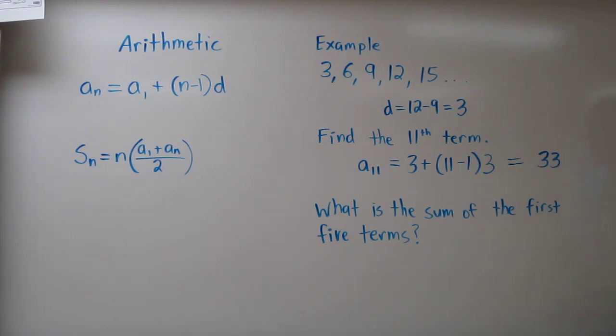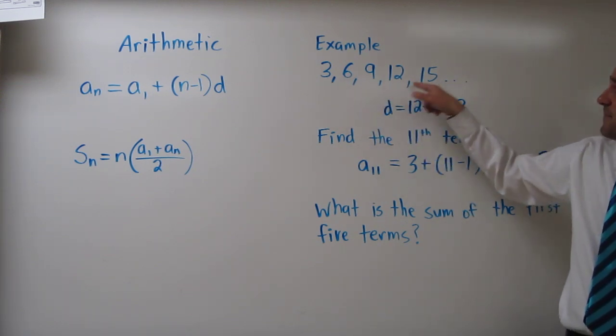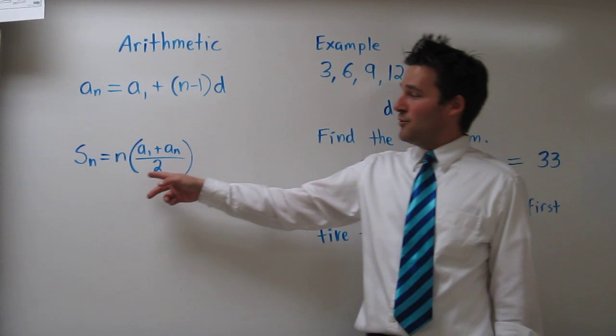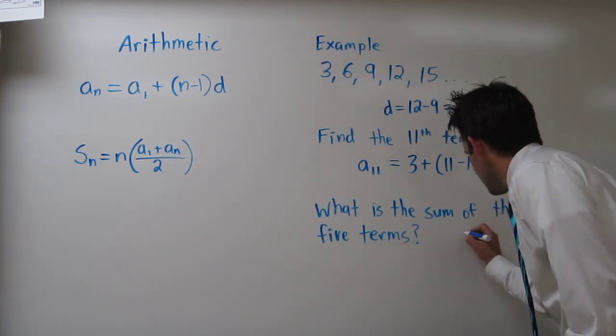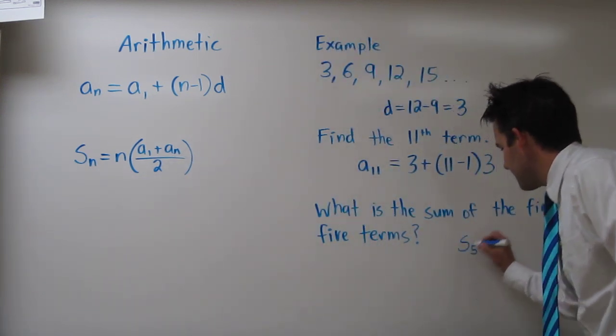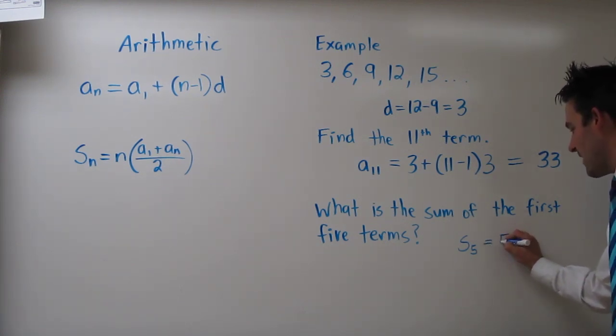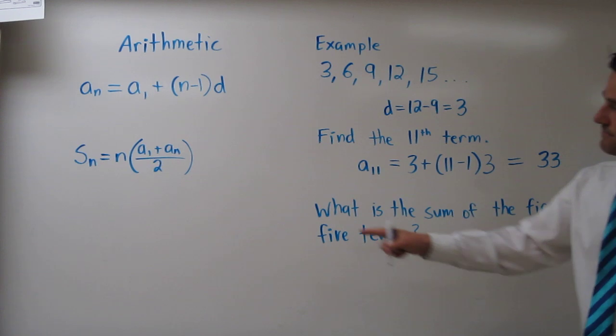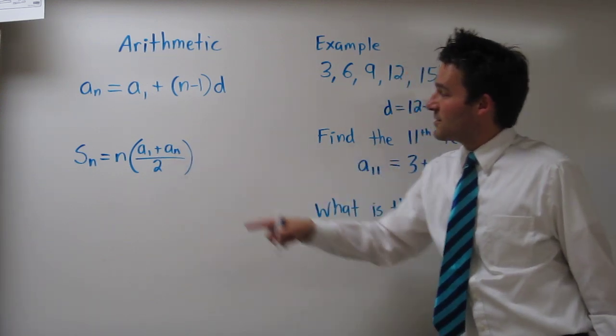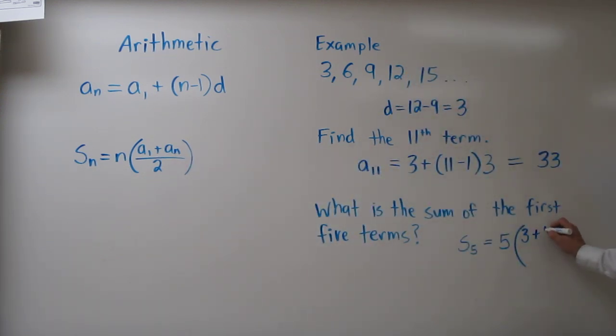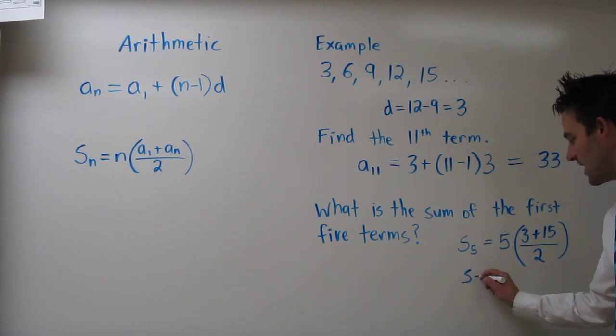So what is the sum of the first 5 terms? Well we could just add these 5 up and say what the sum is, but let's use our new formula. So the sum of the first 5 terms, so we're going to use 5 for n this time. So s sub 5 equals 5, our n, times the first term which is 3 plus the fifth term which is 15, all over 2. So 3 plus 15 is 18, divided by 2 is 9, times our 5, so this sum is 45.